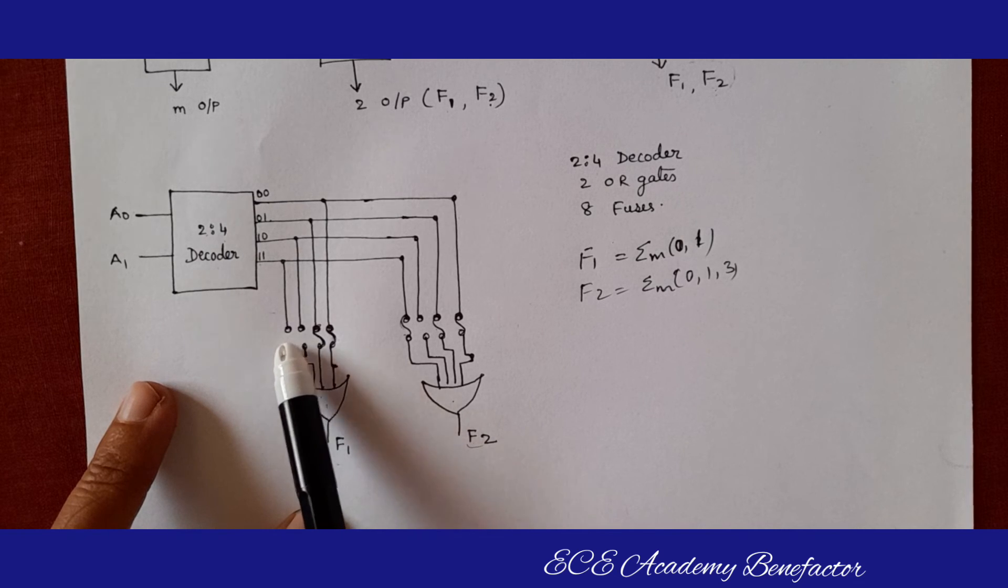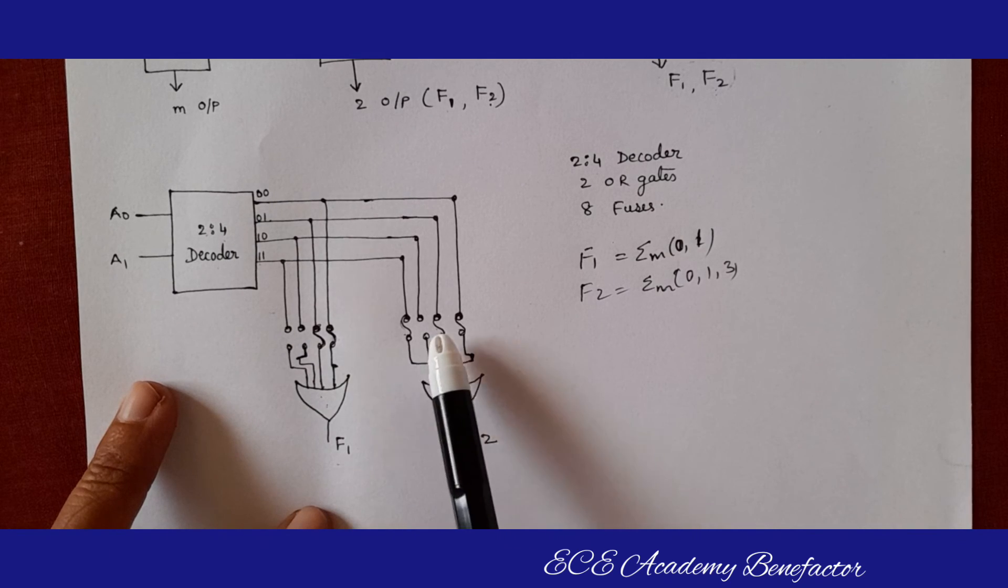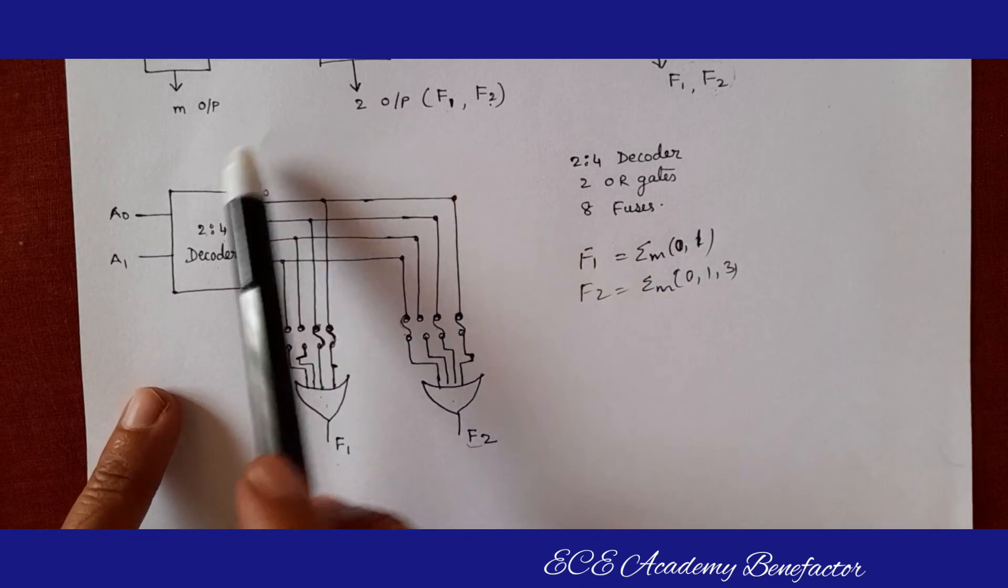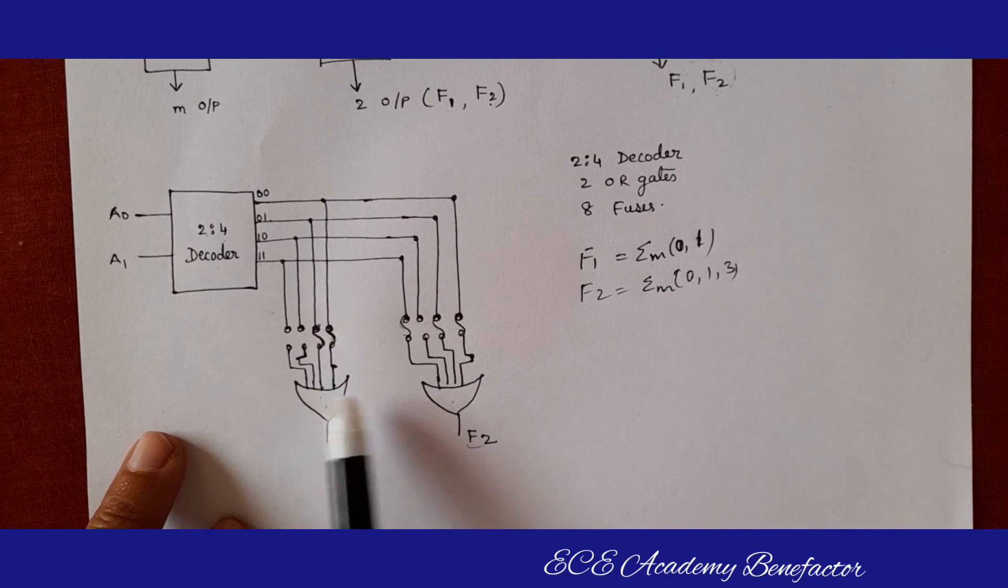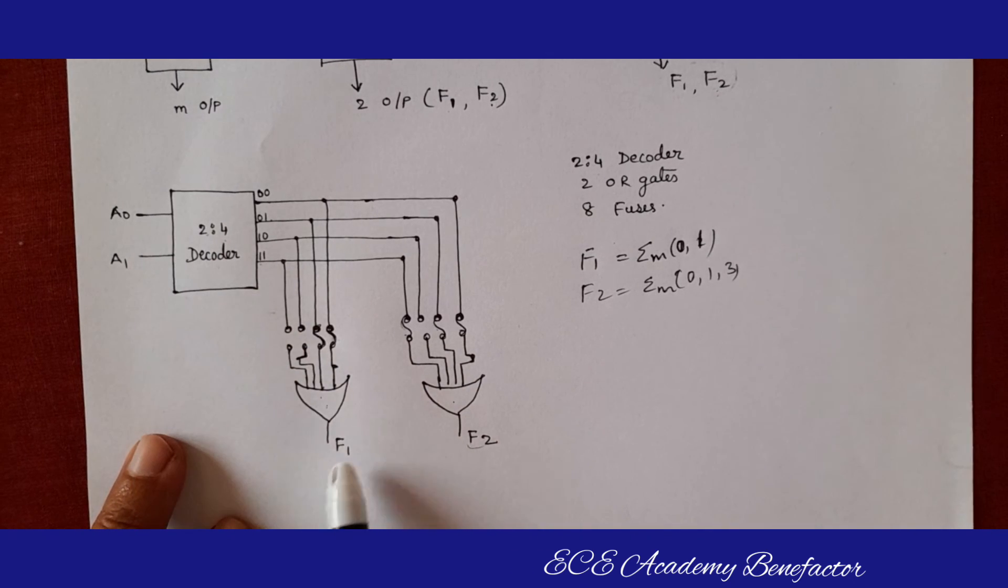We have taken total 8 fuses: 1, 2, 3, 4, 5, 6, 7, 8. For the implementation of this function we need 2 is to 4 decoder, 2 OR gates and 8 fuses, 2 inputs and 2 outputs.